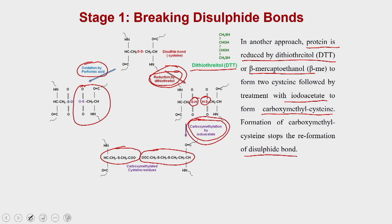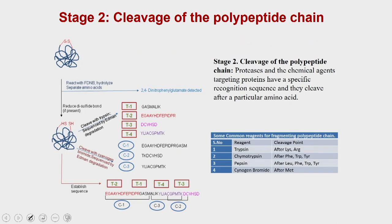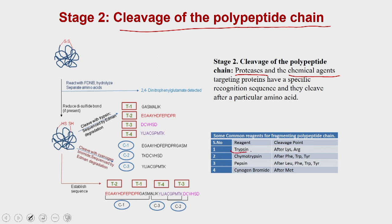So in approach one you use performic acid giving cystic acid, and in approach two you use reduction with DTT or beta-mercaptoethanol followed by reaction with iodoacetamide. Now let us move on to stage two: cleavage of the polypeptide chain. Once the disulfide linkages are removed, the second step is to cleave the linear polypeptide chains using proteases or chemical agents.